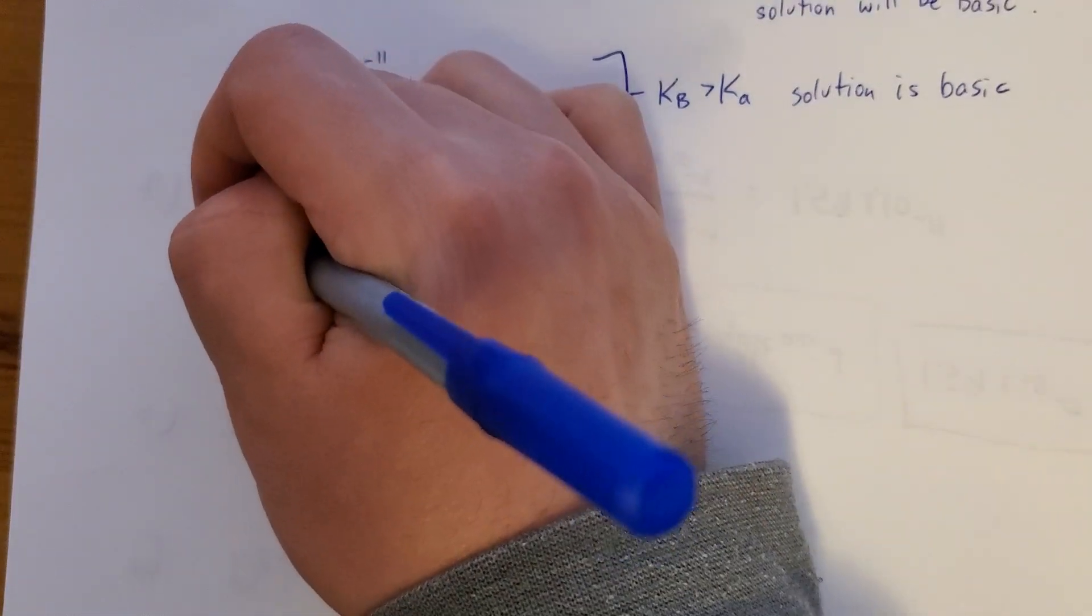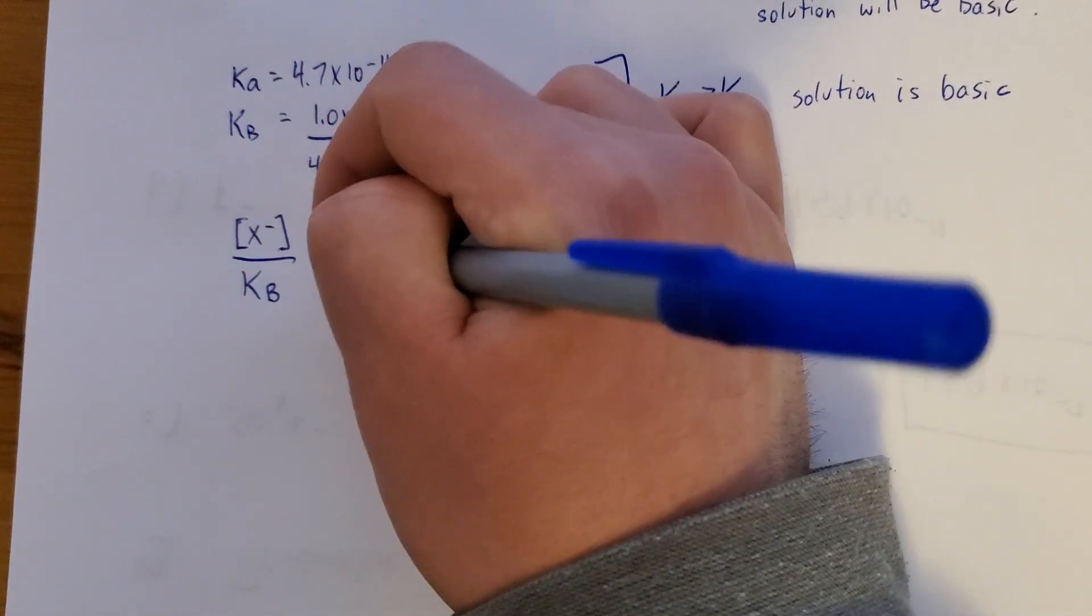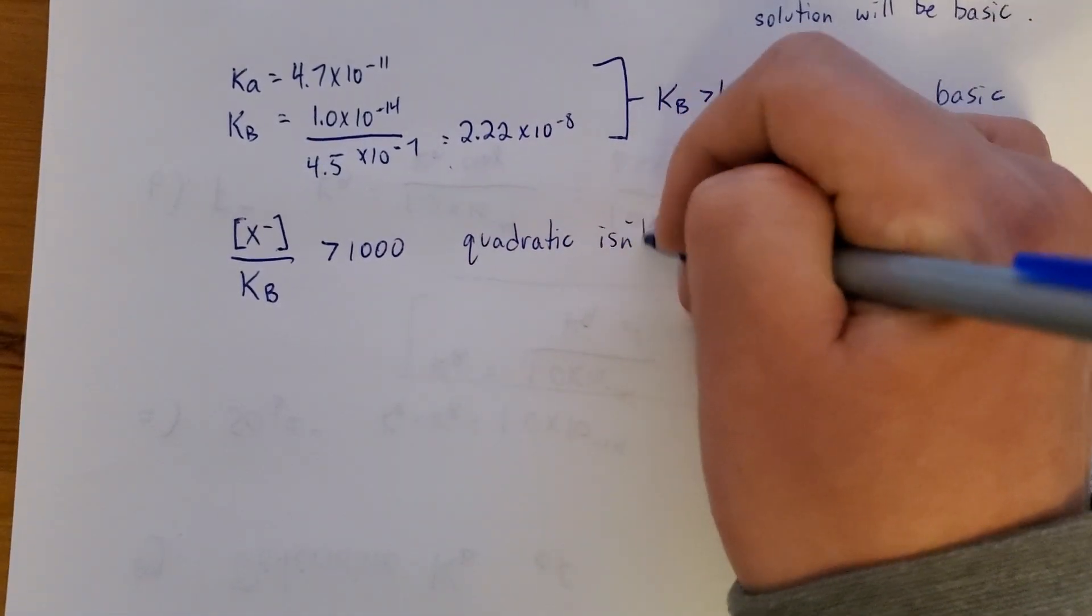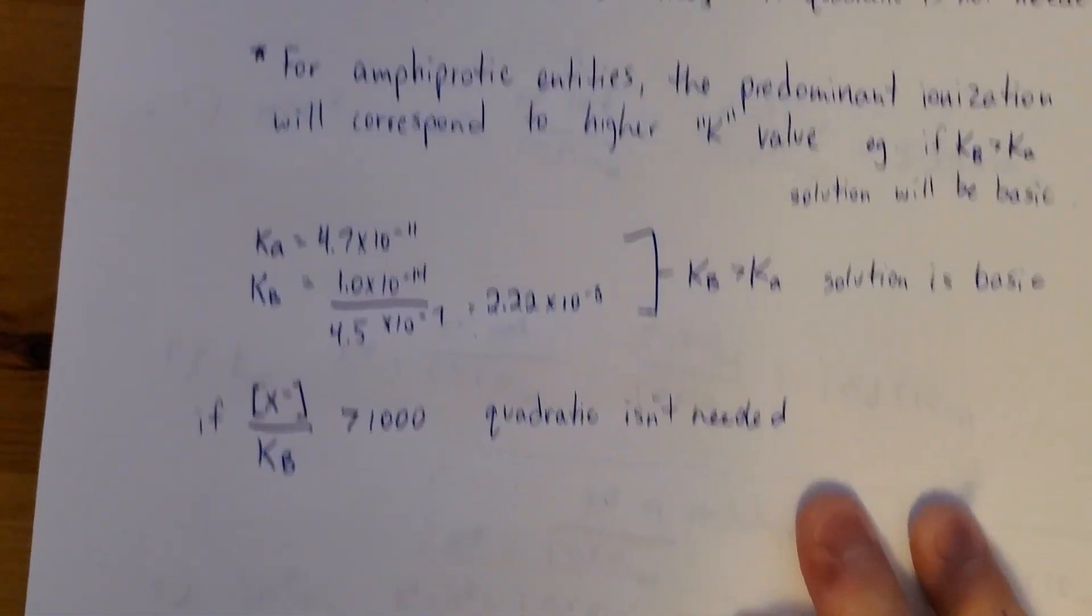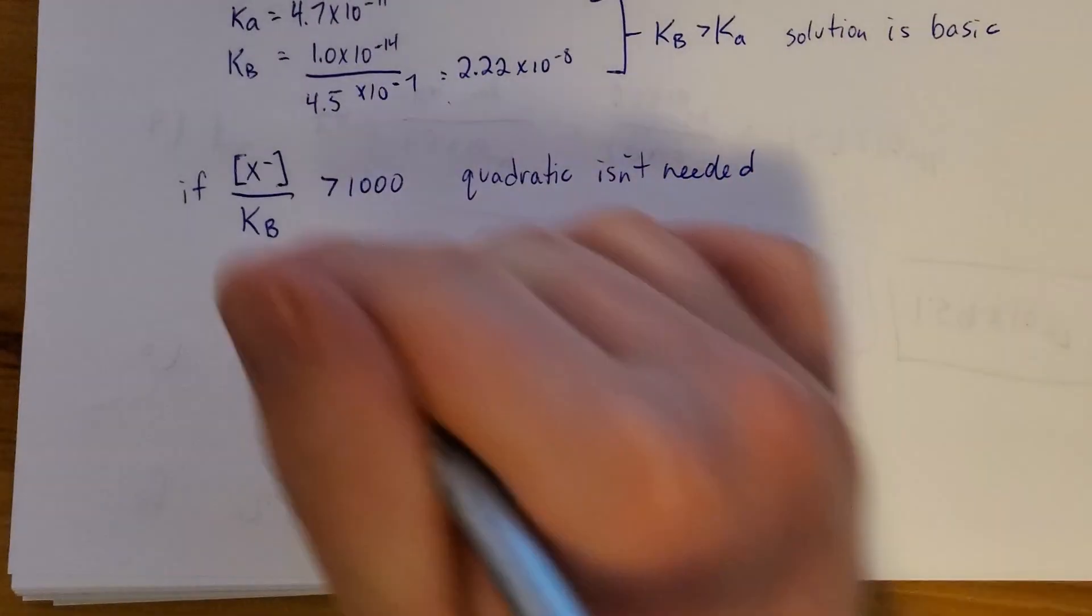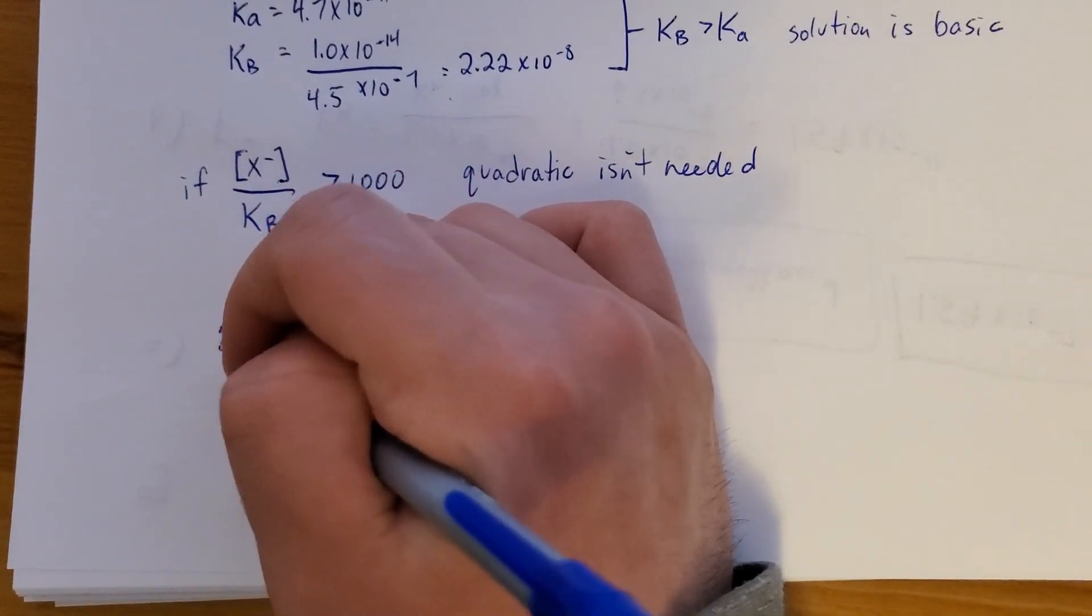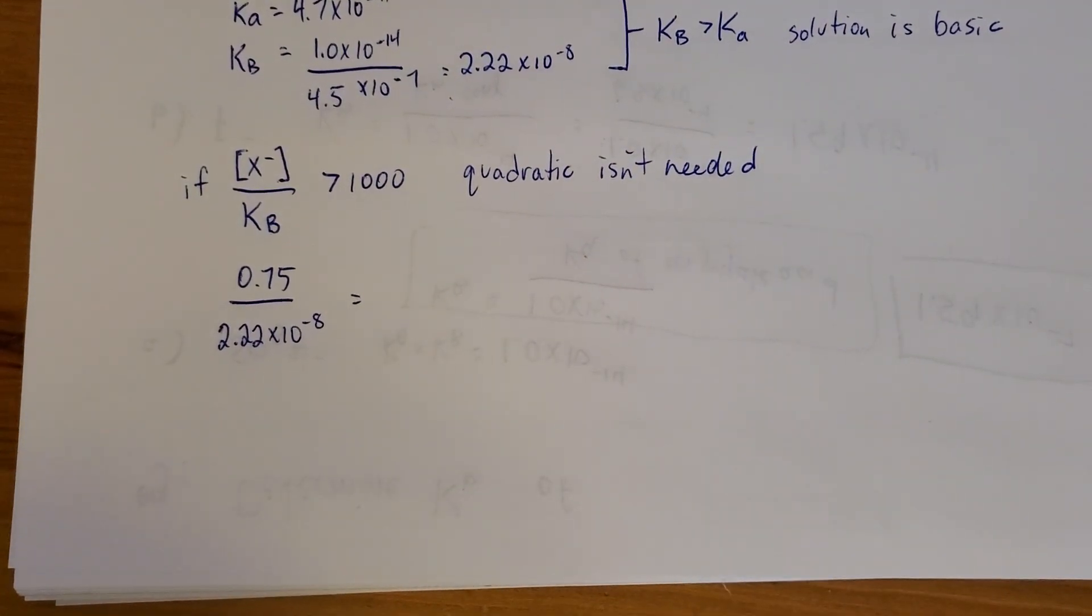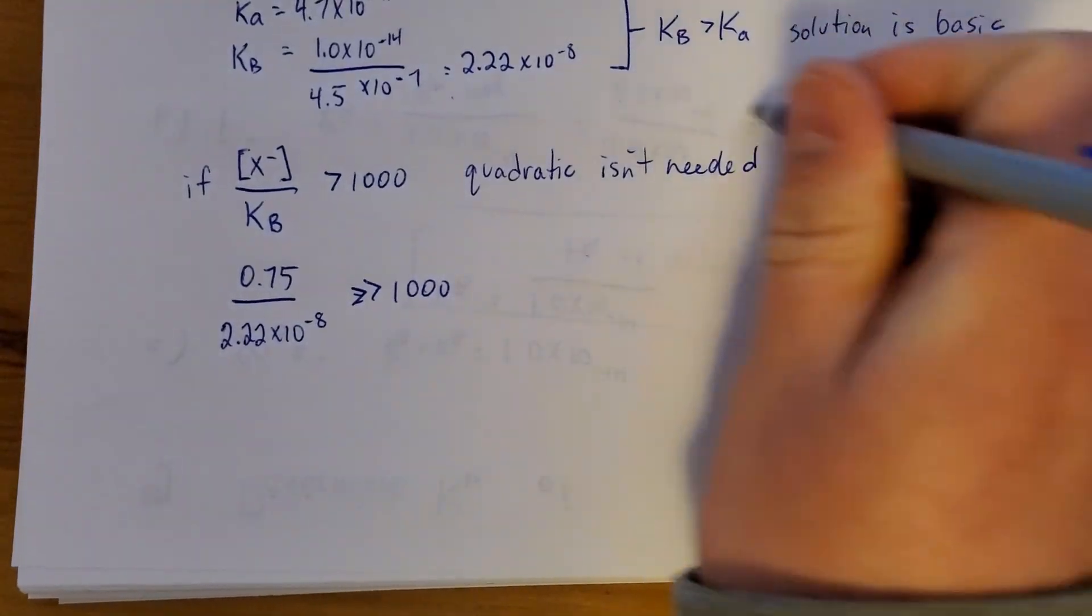Just like for acids, if the base concentration divided by the K value is greater than 1,000, the quadratic is not needed. So let's do that. The weak base concentration up there is 0.75. Divide by KB. I get a huge number here, way, way bigger than 1,000.